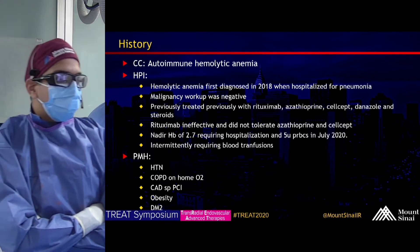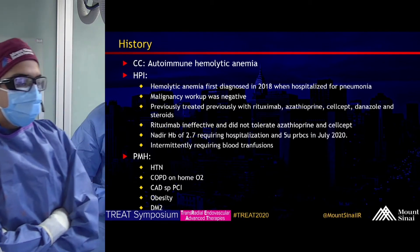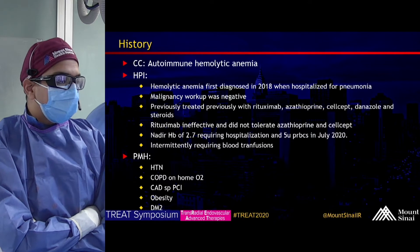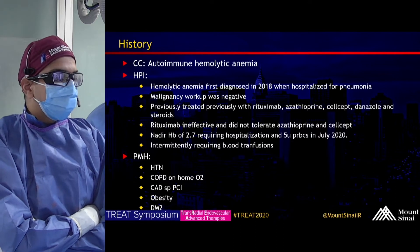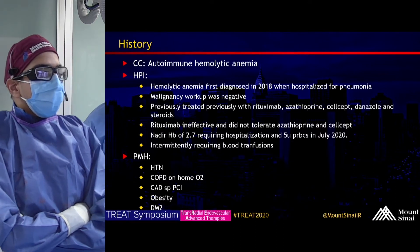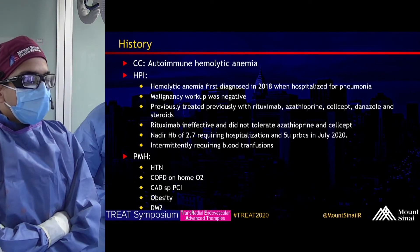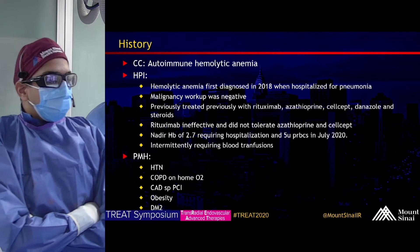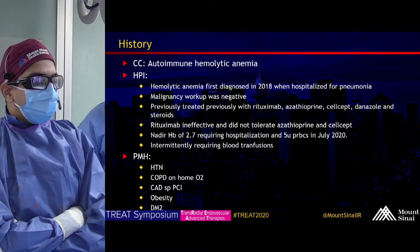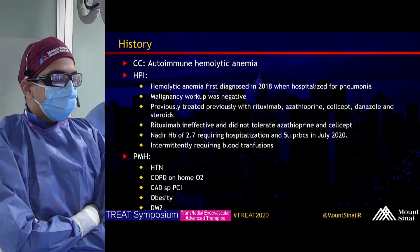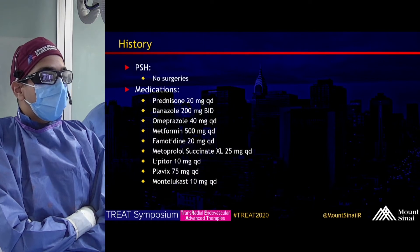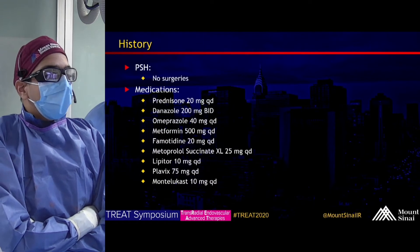His nadir for his hemoglobin was 2.7, back in July of this year, and he required five units of PRBCs and a hospitalization. His past medical history includes hypertension, COPD, coronary artery disease, obesity, and type 2 diabetes.